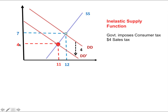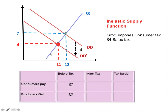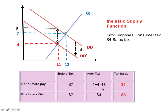Before taxes, same scenario: consumers pay seven dollars, producers receive seven dollars. After taxes, the equilibrium price falls to four dollars, so producers receive four dollars. Consumers pay four dollars in market price plus four dollars in taxes to the government, adding up to eight dollars. So the tax burden is one dollar for consumers and three dollars for producers.